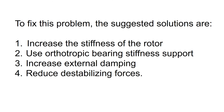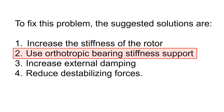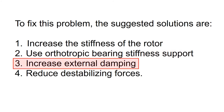To avoid or fix this rotor dynamic instability condition, there are four typical solutions you could apply to your design. First is to increase the stiffness of the rotor, which enables you to operate at a higher speed before encountering oil whip. Second is to use orthotropic bearing stiffness, meaning you have different bearing stiffness along the x and y directions. This can be achieved by implementing a pressure dam bearing or fixed arc bearing. The third suggested solution is to increase damping, for example by improving the bearing geometry such as increasing the bearing length.